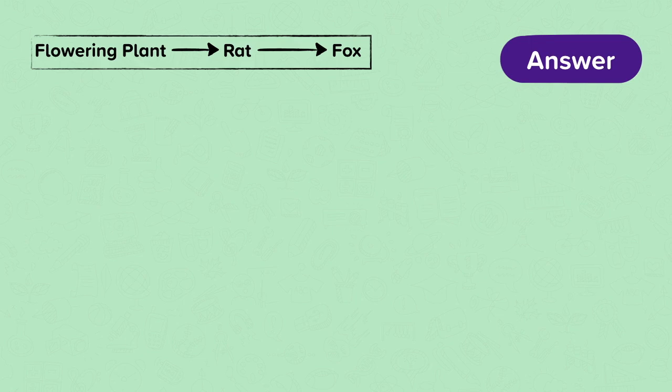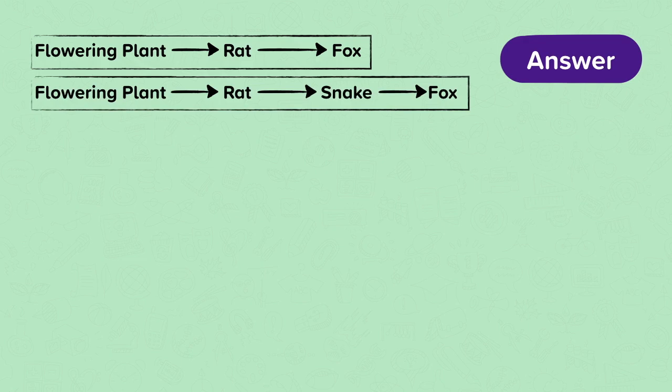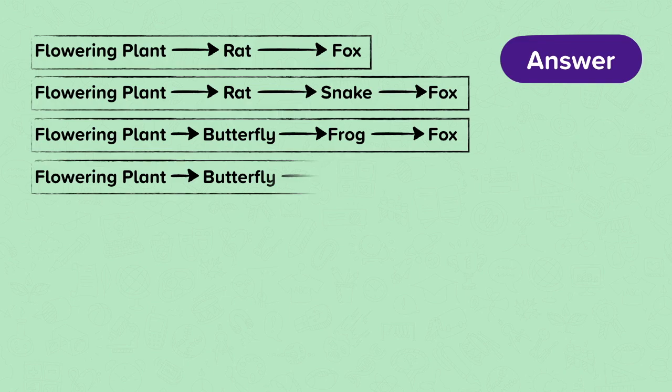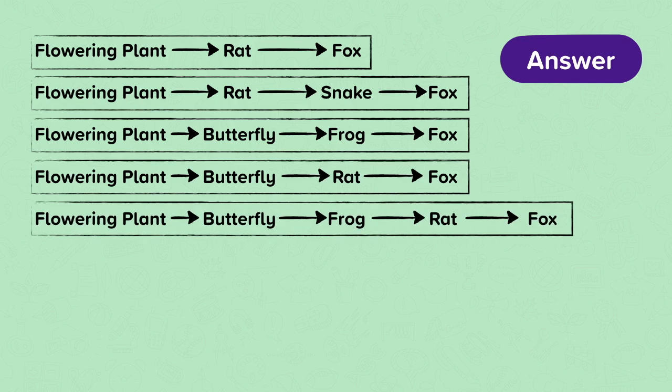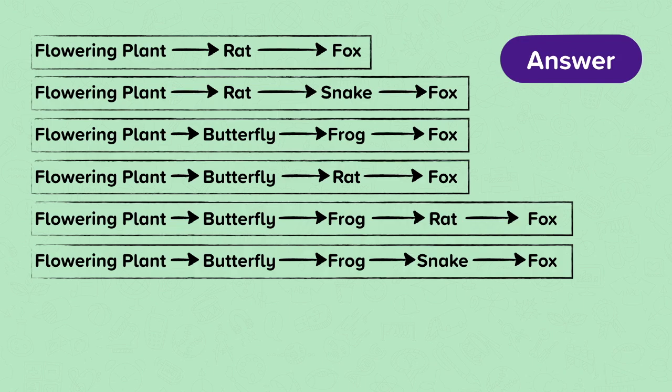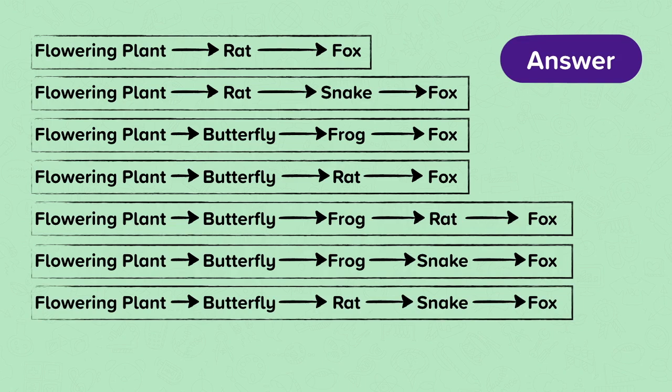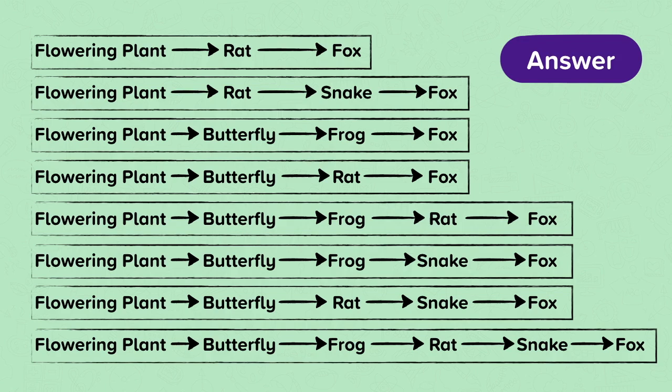Here are the answers with the flowering plant as the producer: flowering plant to rat to fox; flowering plant to rat to snake to fox; flowering plant to butterfly to frog to fox; flowering plant to butterfly to rat to fox; flowering plant to butterfly to frog to rat to fox; flowering plant to butterfly to frog to snake to fox; flowering plant to butterfly to rat to snake to fox; and flowering plant to butterfly to frog to rat to snake to fox.